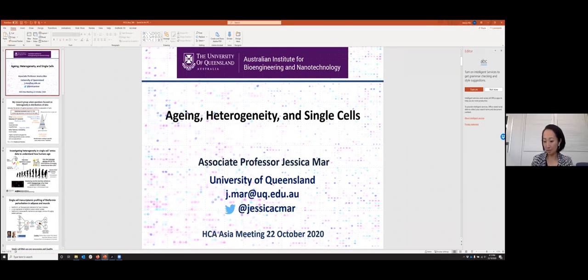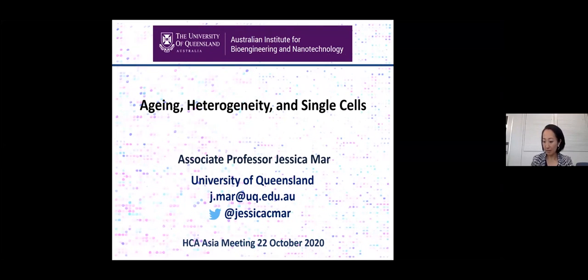Jessica is an associate professor and group leader at the University of Queensland. She leads a computational biology group that investigates how variability in the genome contributes to the regulation of diseases like cancer or phenotypes like pluripotency in stem cells. She received her PhD in biostatistics from Harvard University, followed by postdoc training at Dana-Farber Cancer Institute. Then she became an assistant professor at Albert Einstein College of Medicine in New York, and she has recently moved back to Australia.